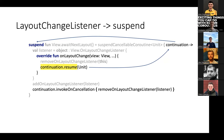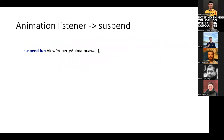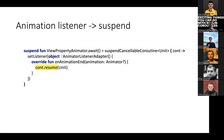Also take a look at continuation.invokeOnCancellation — this method takes a lambda that will be invoked when our continuation is cancelled, for example when we cancel our coroutine scope or when some error occurs. We can perform cleanup in this callback: we call removeOnLayoutChangeListener and unregister our listener, so there will be no memory leaks. We also had an animation listener in our callback, so let's write another extension using suspendCancellableCoroutine — we register a listener and call continuation.resume. Whenever our animation ends, we signal the continuation to resume coroutine execution.